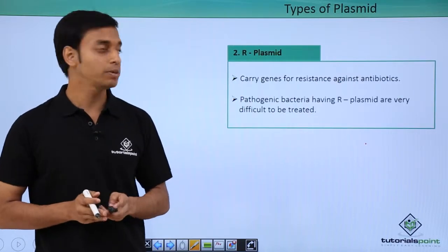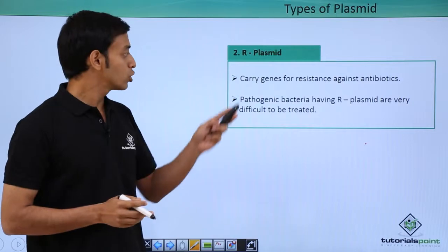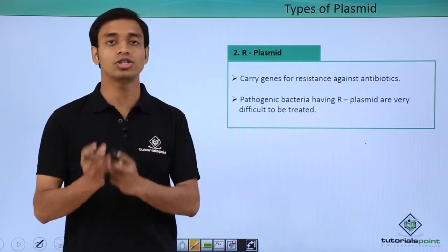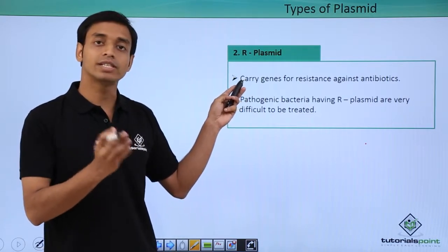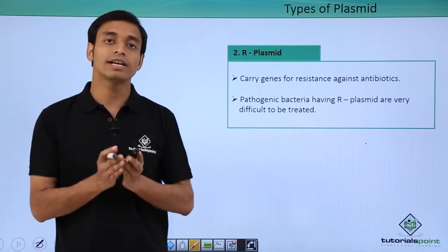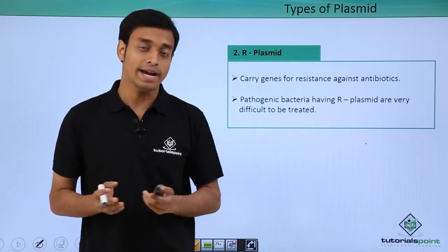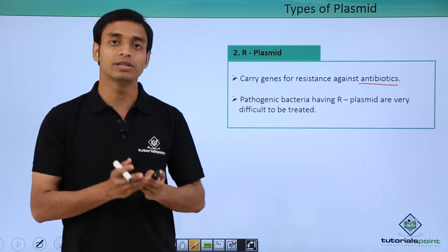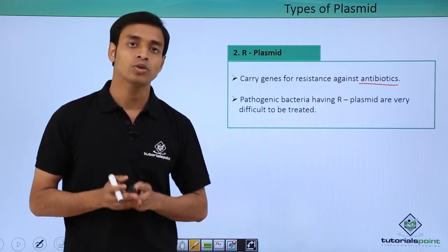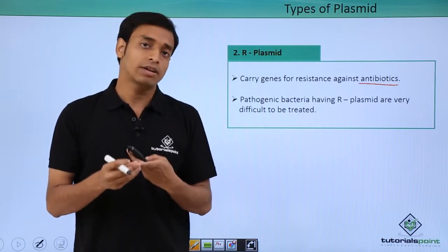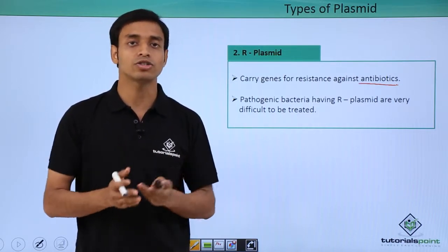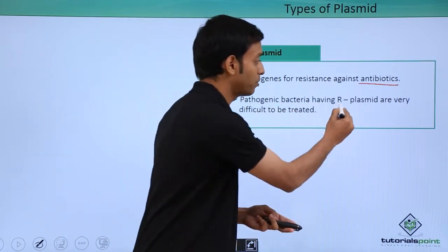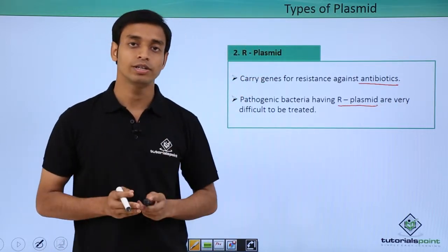The second type of plasmid is the R plasmid, where R stands for resistance. These plasmids carry resistant genes, providing resistance to the bacterial cell against common antibiotics. Antibiotics are chemicals that kill bacterial cells — for example, penicillin, chloramphenicol, sulfonamides, tetracyclines, and many others. Pathogenic bacteria that carry R-type plasmids are very difficult to treat.